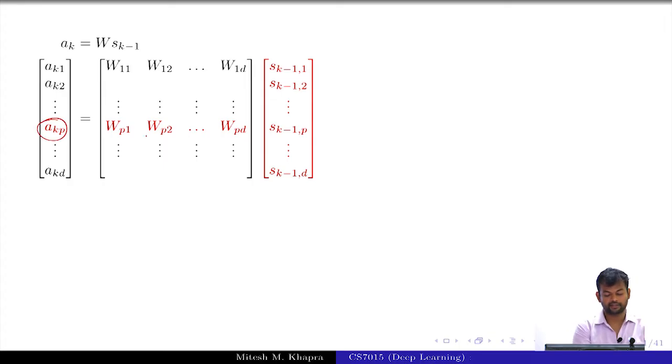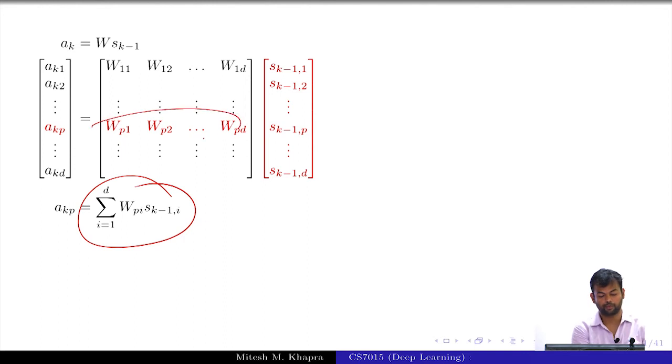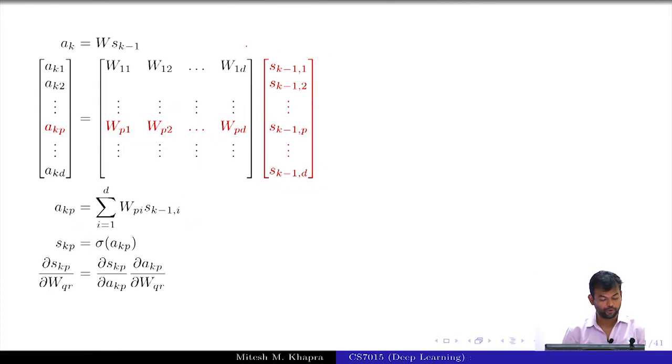Now I can write it as a_kp is actually equal to this summation, which is nothing but the dot product of this row with this column. Now s_kp is just a sigmoid of that. So now if I want to compute ∂s_kp/∂W_qr, I can just write the chain rule: ∂s_kp/∂a_kp, which is straightforward, and then ∂a_kp/∂W_qr. I already have a formula for a_kp. How many of you are fine so far? Please raise your hands high up if you're fine.